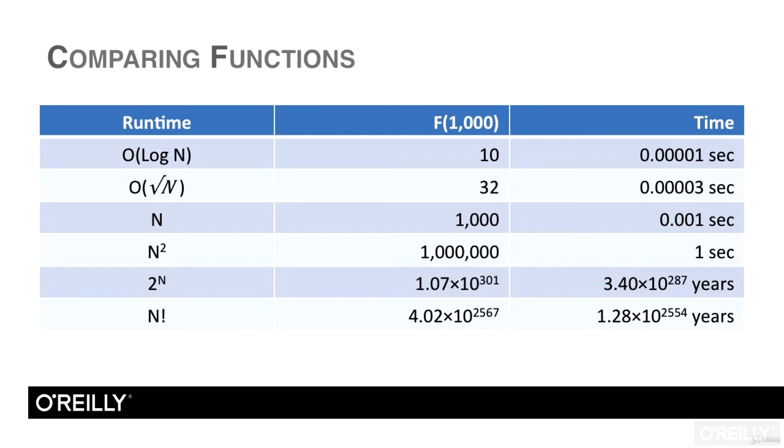The order 2 to the n and n factorial functions grow so quickly, there's no chance you could use the last two algorithms where n is 1,000.